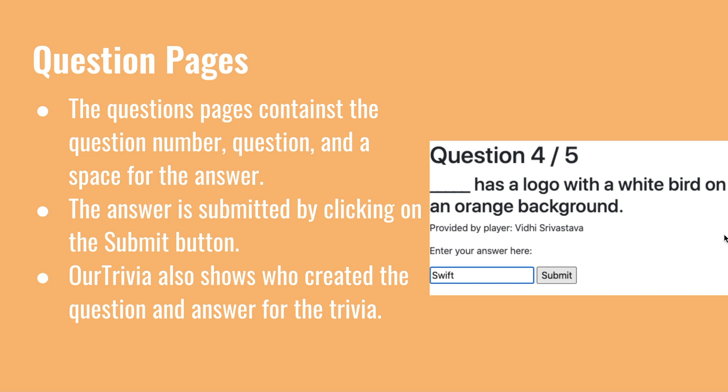It'll redirect them automatically to the question page. Each question page will have a unique and random question for their specific difficulty level, which contains the question number, question, and space for the answer. You can submit your answer by clicking on the submit button. It also shows with the question who created the question and answer for that certain question.